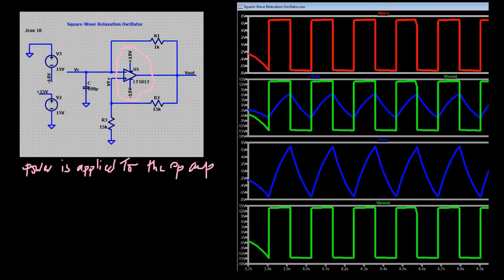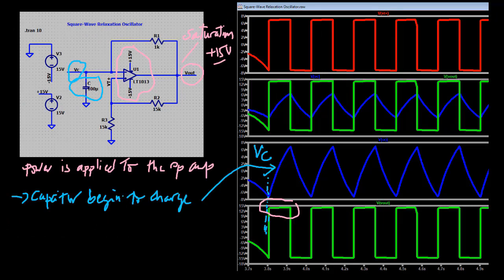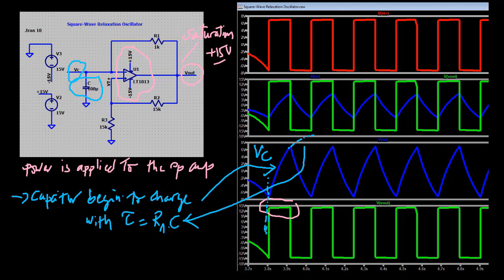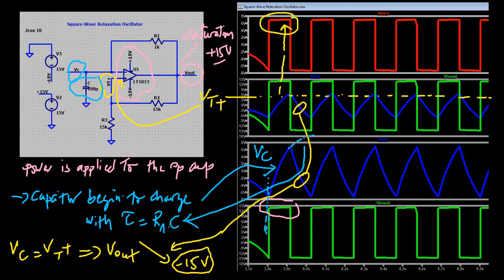Assume that when power is first applied, the op-amp's output goes toward positive saturation. The capacitor will begin to charge up toward the op-amp's positive supply voltage, around plus 15 volts, with a time constant of R1 times C. When the voltage across the capacitor reaches the threshold voltage, the op-amp's output suddenly switches to negative saturation, around minus 15 volts.